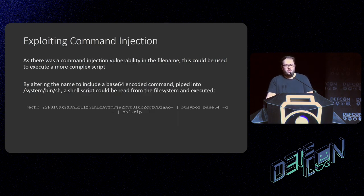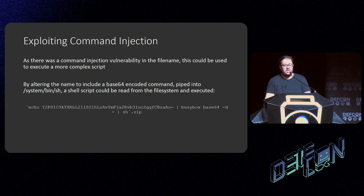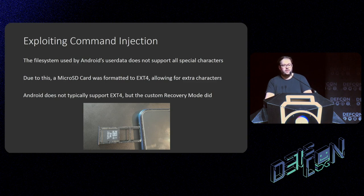As there was a command injection vulnerability in the file name, this could be used to execute a more complex script. If I wrote a complex script, base64-encoded it, and piped it into `/system/bin/sh`, a shell script could be loaded from the filesystem and executed. This script essentially just cats from the user data partition a much more complex script. Unfortunately, the filesystem used by Android's user data does not support all special characters — for instance, the pipe character needed to perform this exploit — so I'd have to find a way around this.